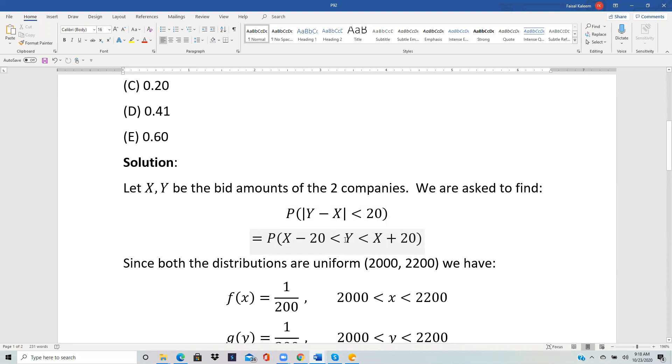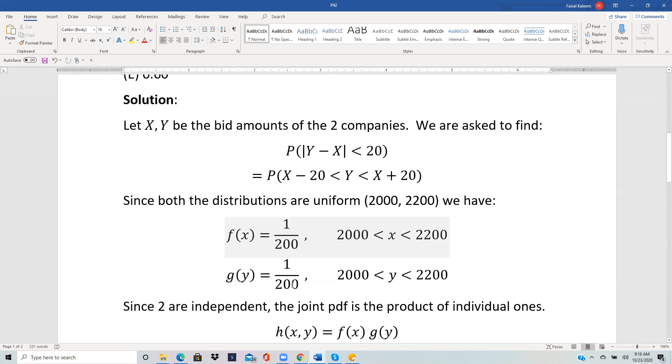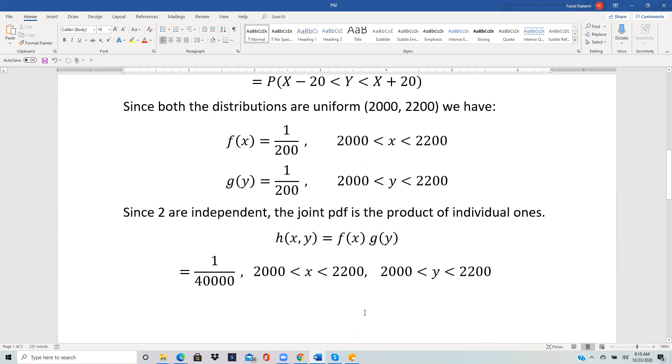Both distributions are uniform, so the difference between the endpoints is 200. The PDF will be 1 over 200 for both X and Y going between 2000 and 2200. For independent variables, the joint PDF is just the product. For uniform distribution, one variable, the interval length is basically what this number is. For two variables, it ends up being the area of the rectangle, so that's our total probability.